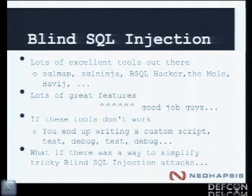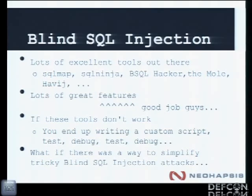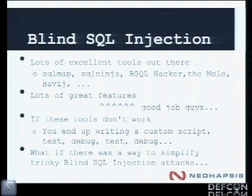There are awesome tools out there — SQLmap, SQL Ninja, the Mole — they all have great features and they're great. But when these tools don't work, what do you end up doing? You end up maybe writing your own query. There's some weird nuance where requests have to be double URL encoded, or you can't use ASCII for some reason, or some command that should work on the database server just doesn't because the DBA made a specific policy. So you fire up a Ruby or Python script and write your own logic. It's a pain and takes a lot of time.